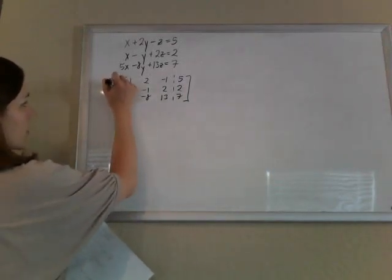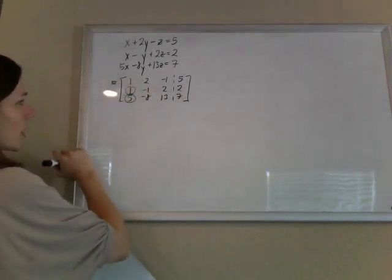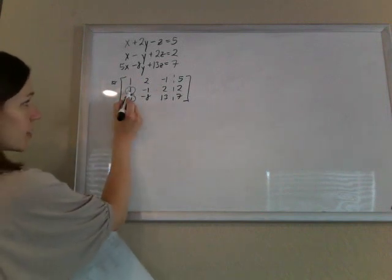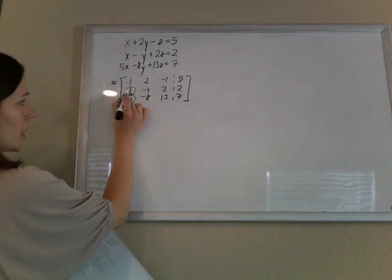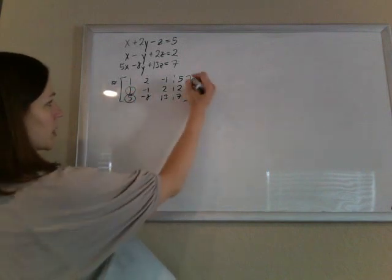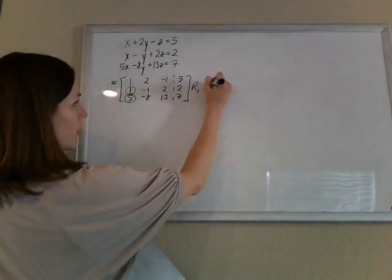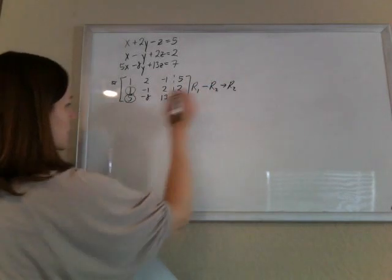Alright, here we go. Using that first row to make zeros in the first column. I can make that a zero by just doing 1 minus 1. I'm going to do row 1 minus row 2 to make my new row 2. So row 1 minus row 2 to make my new row 2.